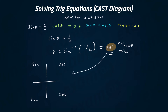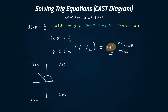We're going to mark 30 degrees onto the CAST diagram. We start from the positive x-axis and go anti-clockwise. So this is 30 degrees. For reference, 60 degrees would be here, 90 degrees there, and for example 145 degrees would be here. That's how you mark angles — always start from the positive x-axis and go anti-clockwise.